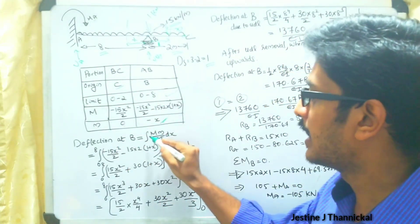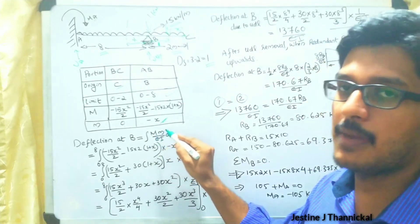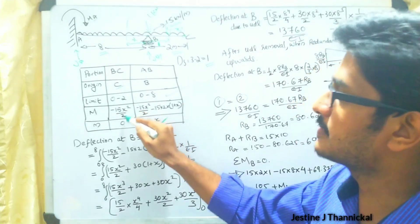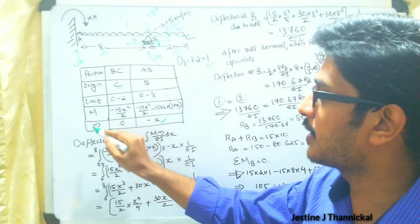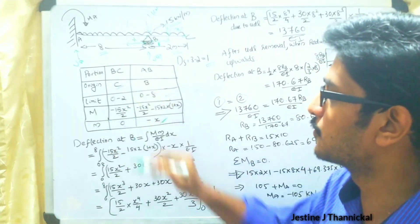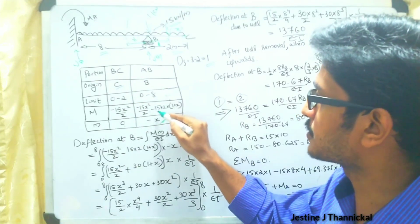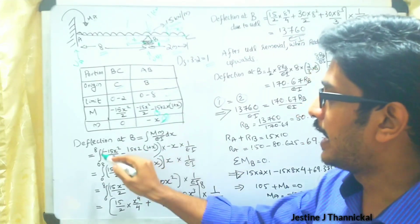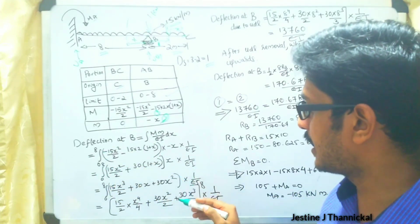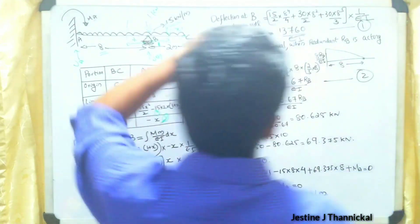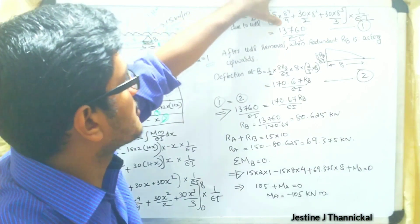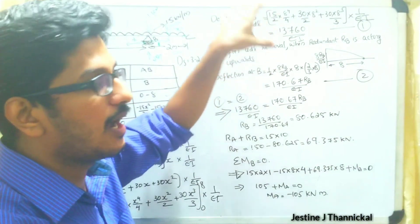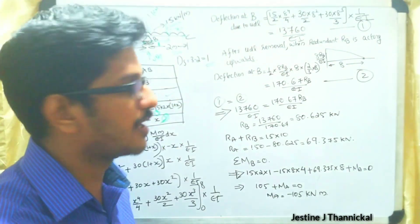The deflection at B equals the integral of capital M multiplied by small m divided by EI, dx. For segment BC, since small m is 0, the contribution is 0. Multiplying and integrating the two expressions for segment AB, we finally get the deflection at B due to the UDL as 3760 divided by EI.